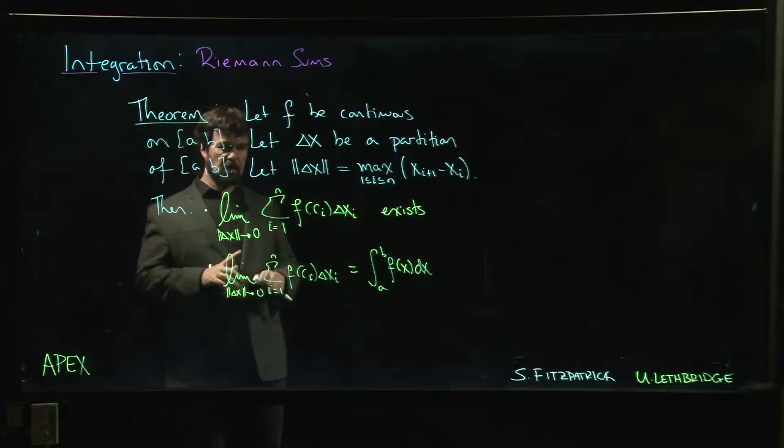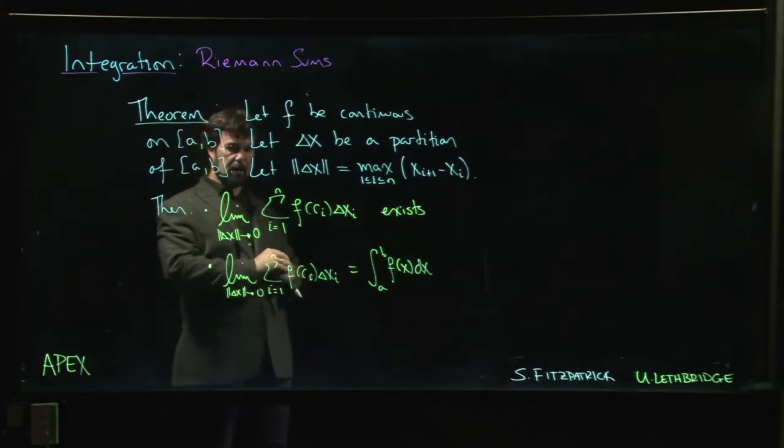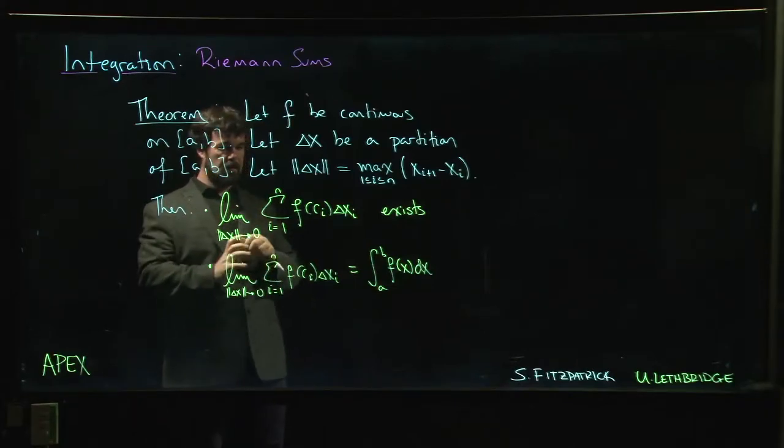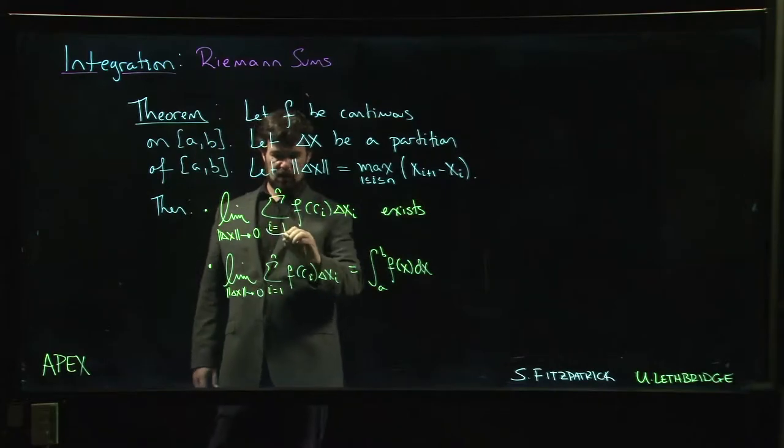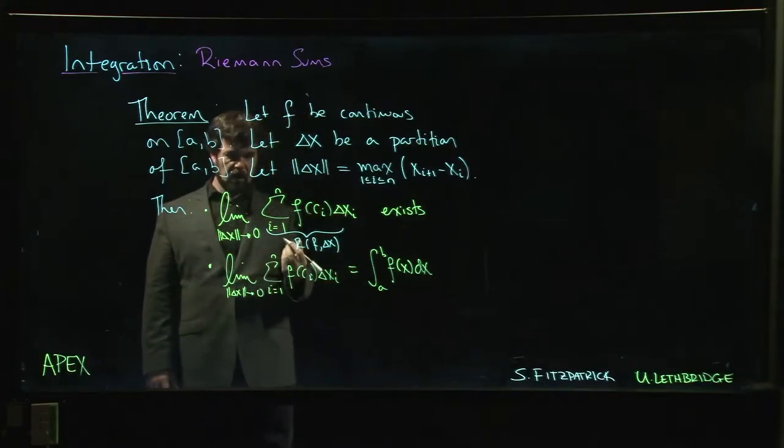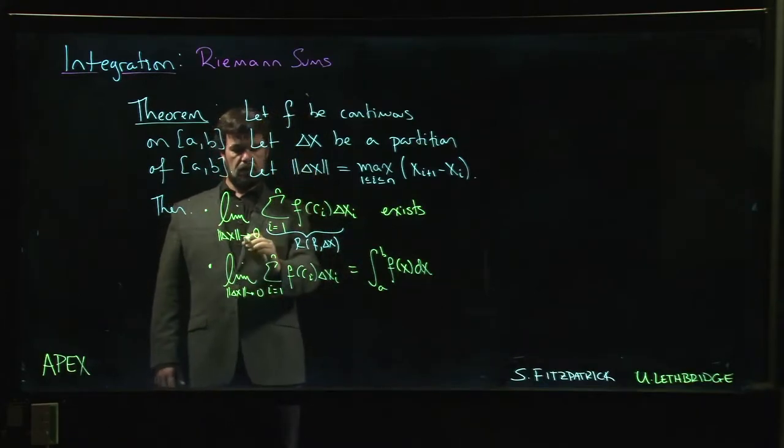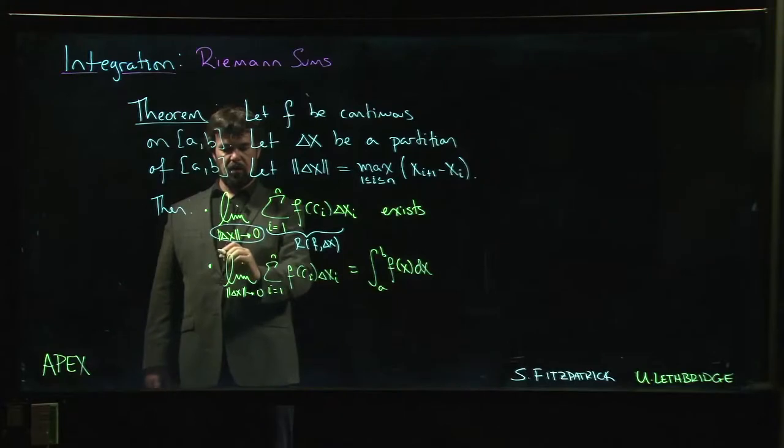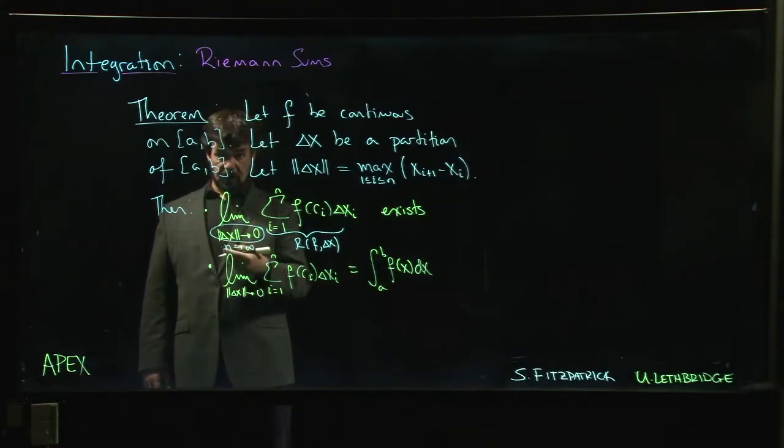So the first thing is that for a continuous function you're guaranteed that this limit exists—the limit of the Riemann sum. This is the Riemann sum for the function f and the partition delta x. Saying that the norm of the partition goes to zero is the same thing as saying that n goes to infinity if you're working with a uniform partition or really any partition for that matter.